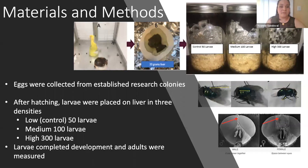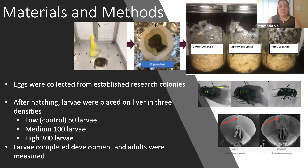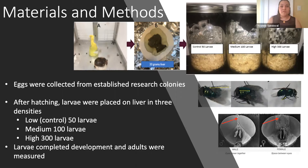To test this hypothesis, eggs were collected from established research colonies and allowed to hatch for species Lucilia sericata and Calliphora vicina. Larvae were placed on the same amount of raw pork liver for each treatment jar, each containing a different level of density. This was repeated five times: a control with 50 larvae that had plenty of nutrients, 100 larvae at medium density, and 300 larvae at high density. Once all jars were sealed, larvae were left to complete their development into adults. Finally, adult flies were counted, sexed, and measured based on proxy fitness measurements, because the size of adults reflects the size of larvae.